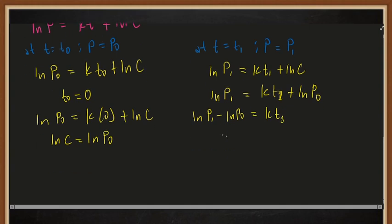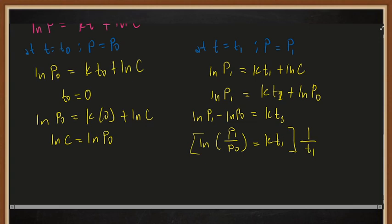Using the properties of logarithms, we have ln(p₁/p₀) = k·t₁. Multiplying both sides by 1/t₁ to isolate k gives us: k = ln(p₁/p₀) / t₁.